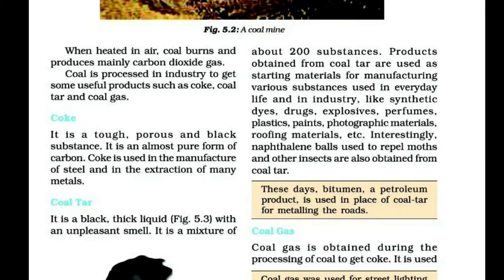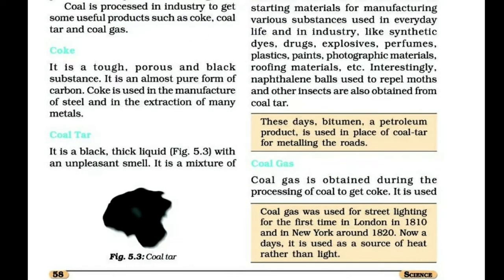Next, coal gas. Coal gas is obtained during the processing of coal to get coke. It is used as a fuel in many industries situated near the coal processing plants. Coal gas was used for street lighting for the first time in England in 1810 and in New York around 1820.